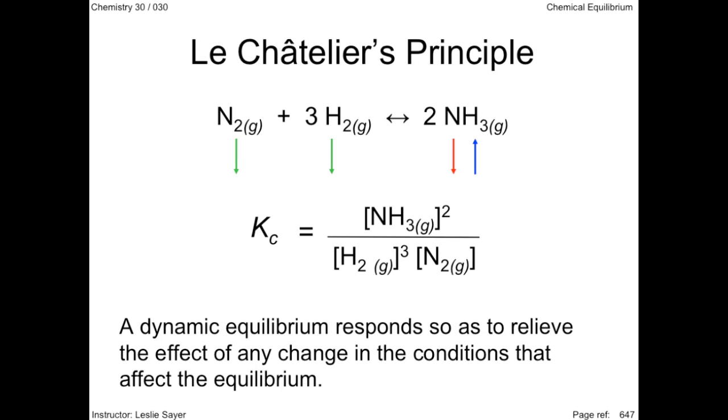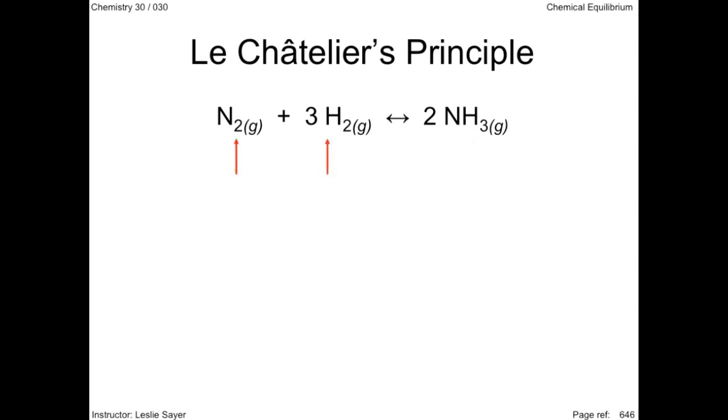If a product is removed, reactants react more to increase the product. If hydrogen and nitrogen were added to the equilibrium system, they increase their rate of reaction to produce more product. We say the result of the change in equilibrium causes the reaction to shift right, which results in decreasing the reactant concentration.